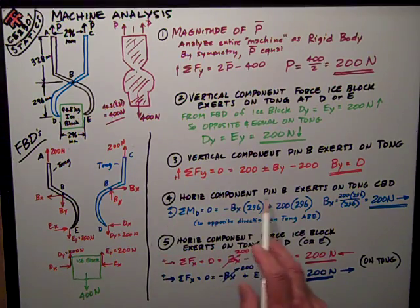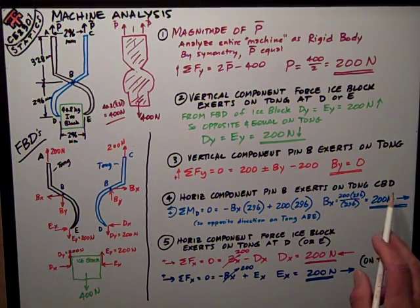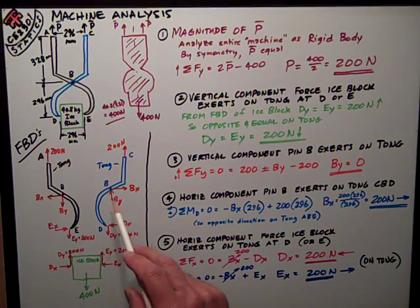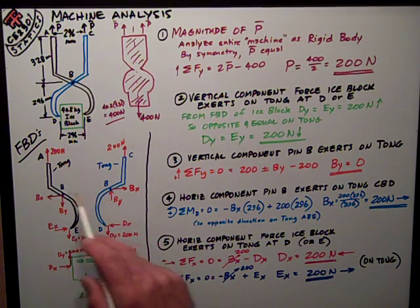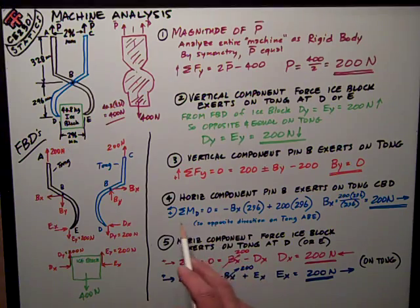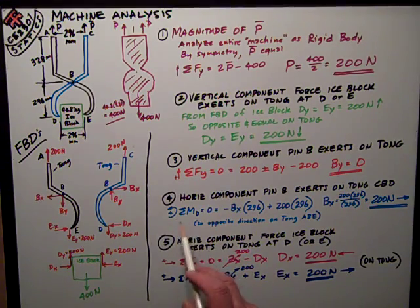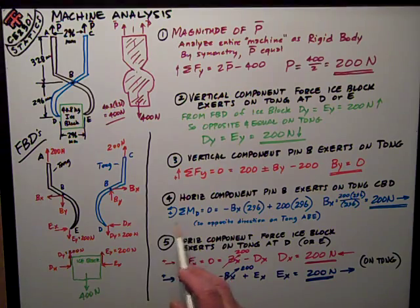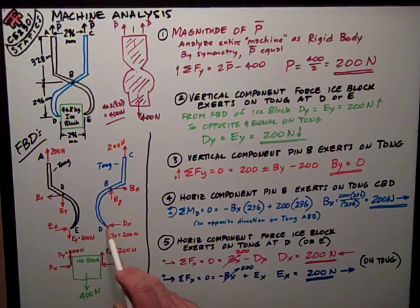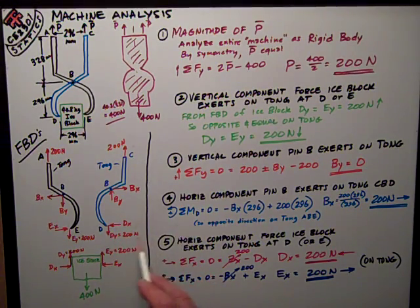Part four, the horizontal component the pin B exerts on the tong CBD, and it works that opposite way on the ABE, but let's do a sum of moments, finally we get a beloved sum of moments equation, sum of moments about point D.